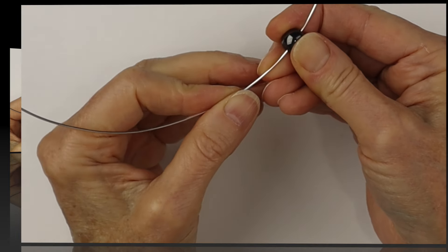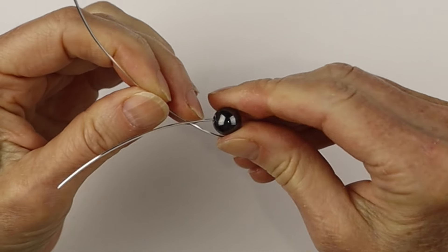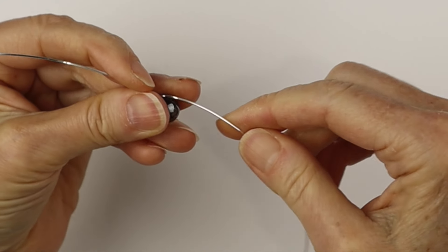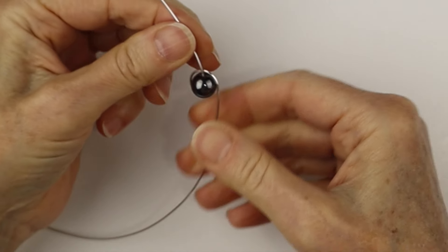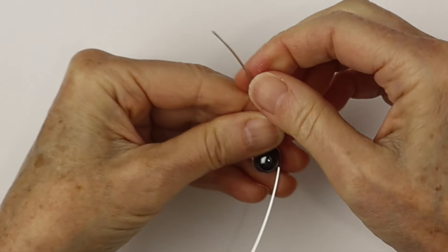We'll put on a 10 millimeter bead. This is a hematite bead and we're going to wind the wire to the back and bring it all the way around so we have one vertical wire and the wire to the back.